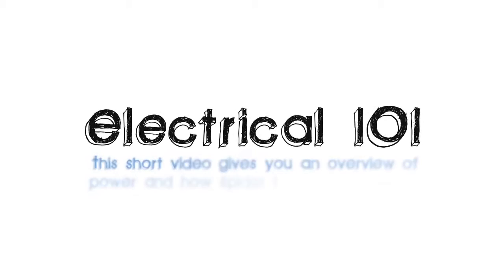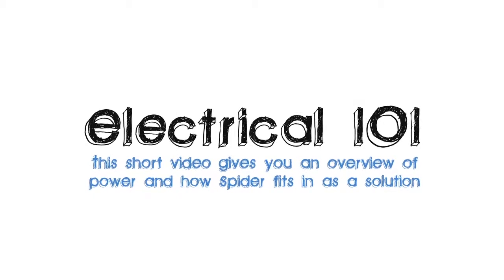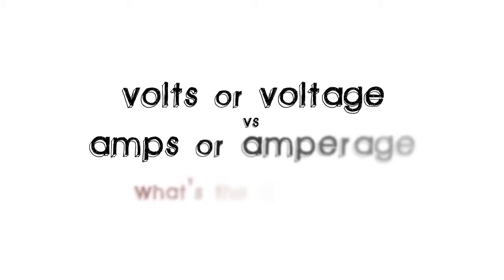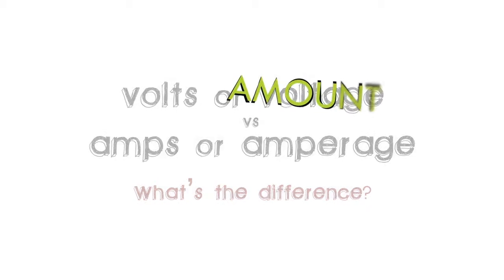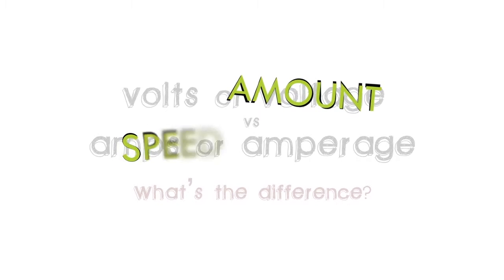Welcome to Electrical 101. First, what are volts and what are amps? Basically, volts are the amount of power available, and amps are the speed of that power.